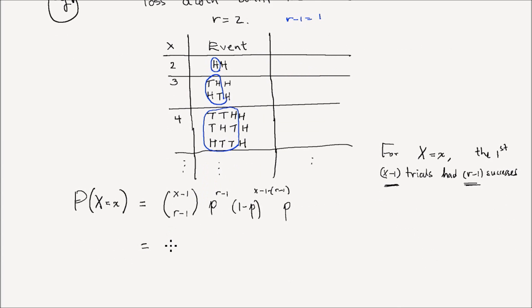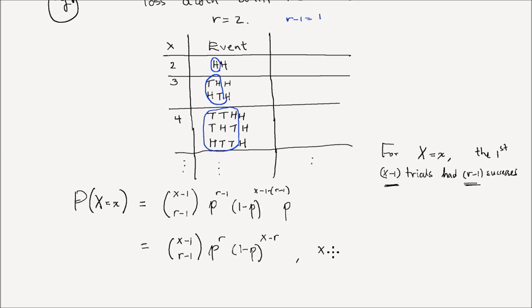If you simplify that, we get: C(x−1, r−1) times p to the power of R, times (1−p) to the power of x minus R. And X can take values equal to R, R plus 1, R plus 2, and so on. That is the negative binomial PMF.